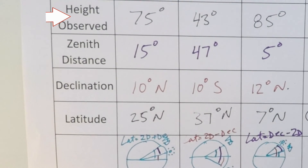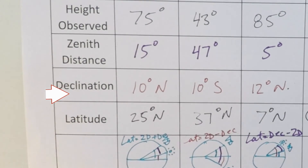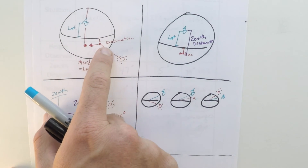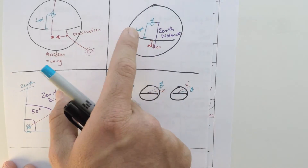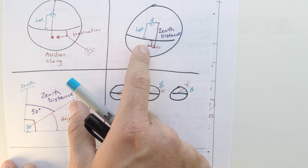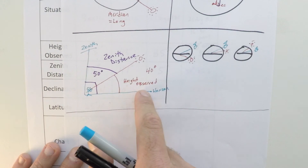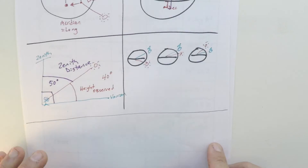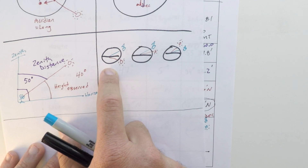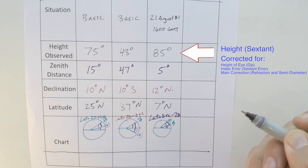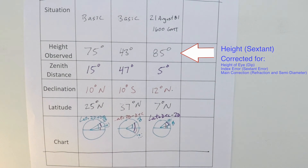To recap: the process is to take the height observed, convert it to zenith distance, find the declination from the nautical almanac, and compute latitude based on the situation. At one time during the day, the Sun's declination passes our meridian, allowing us to define our latitude through the mathematical relationship between declination and zenith distance — where zenith distance is 90 degrees minus the height observed. Finally, think about your dead reckoning position relative to the Sun's declination to determine which formula applies. Remember that height observed values must be corrected sextant readings.